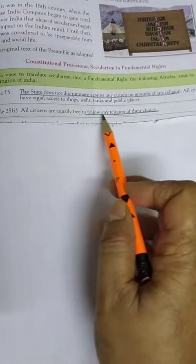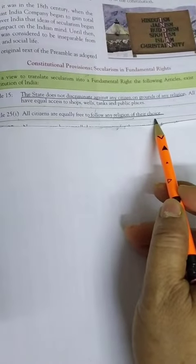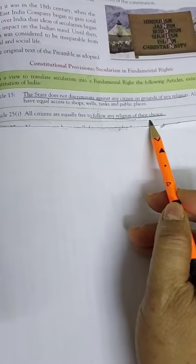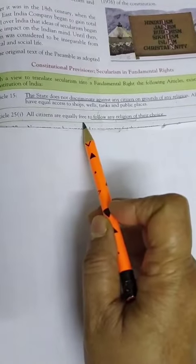Article 25: First, all citizens are equally free to follow any religion of their choice. यानि कि हम अपनी choice से किसी भी धर्म को freely follow कर सकते हैं, adopt कर सकते हैं.